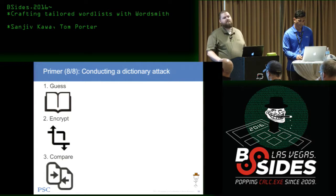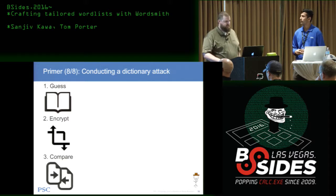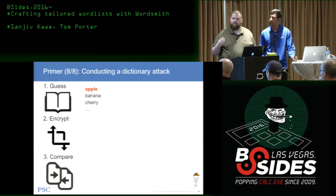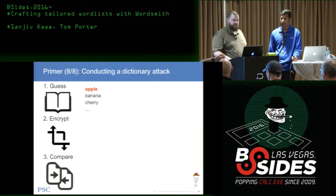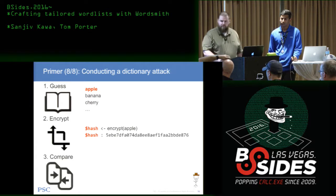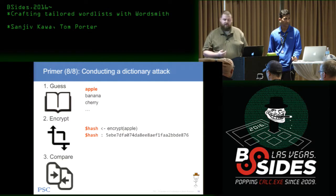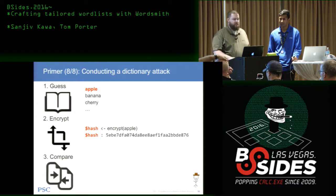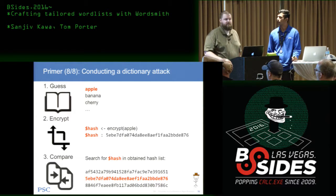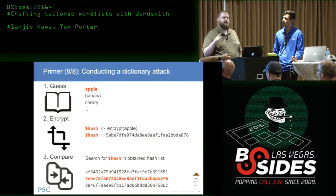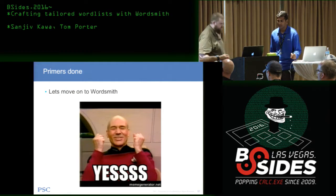The steps for carrying out a dictionary attack boil down to a three-step process we call the guess-encrypt-compare cycle. Our guesses are words plucked from the word list, iterated one by one. We take each word, put it into our encryption algorithm — in this case NT hashing — and get a fixed-length output. We then look up that hash against our list of obtained password hashes. If they match, we can map it back to the original word and we have our clear-text password. And with that, Sanjiv will move on to WordSmith.